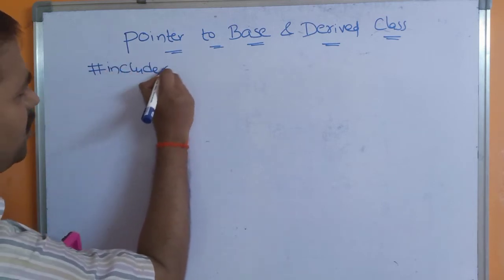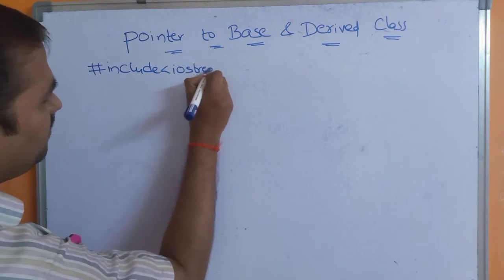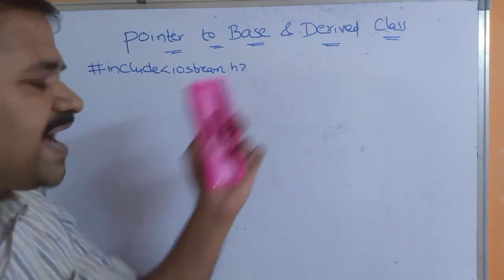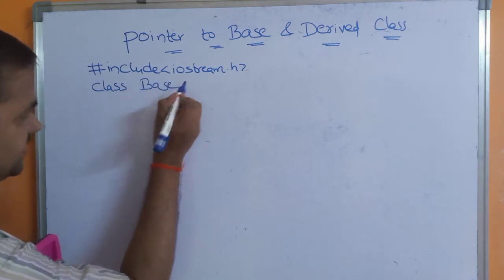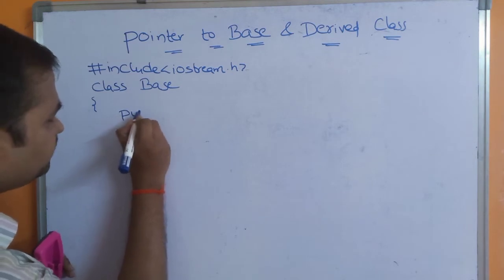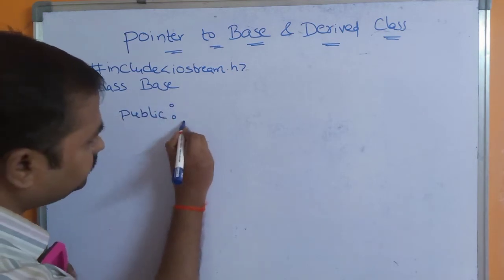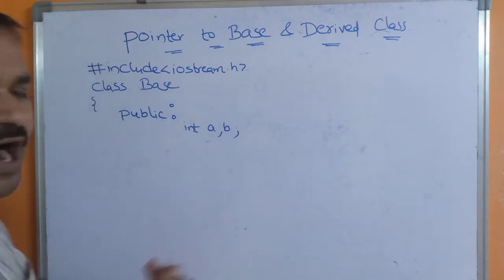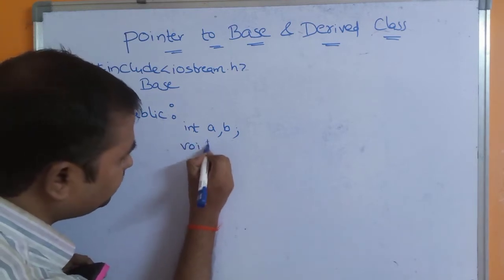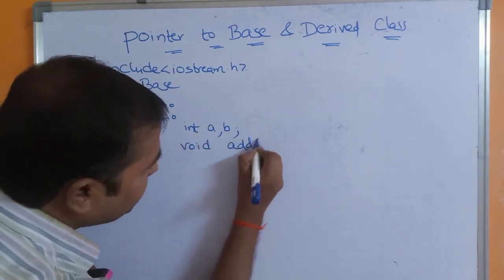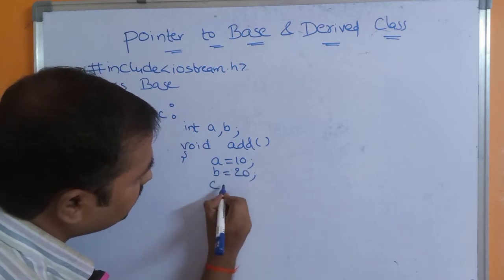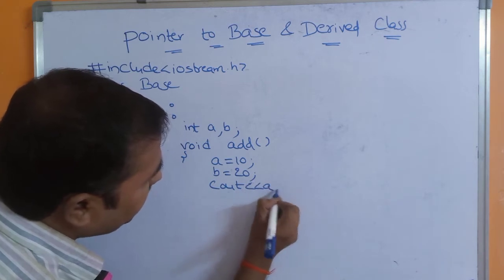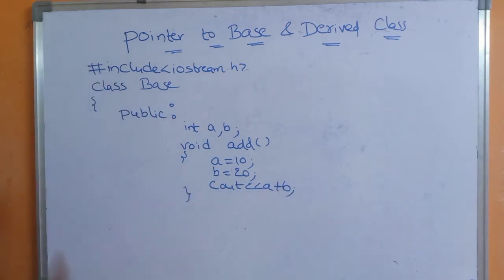We include iostream.h because in this program we have to use cout and cin objects, which are present in iostream.h. First let us create a base class. The name of the base class is 'base'. Under the public section, let us declare two member variables: int a, b. And define one member function, which is the 'add' function. So void add — let us perform some initializations here: a is equal to 10, b is equal to 20. Cout less than less than a plus b. So this is our base class. Now let us close the class declaration.